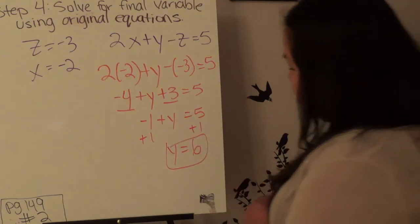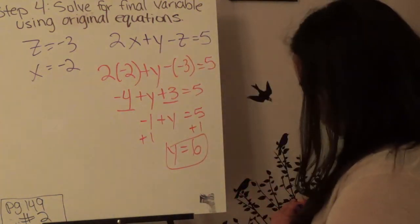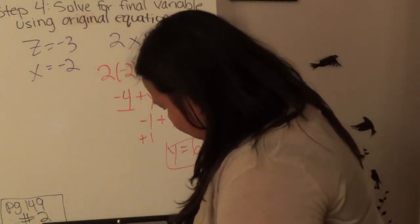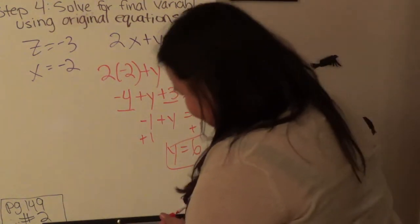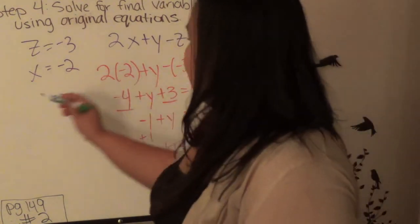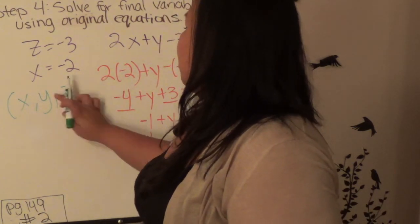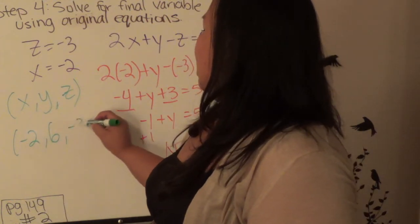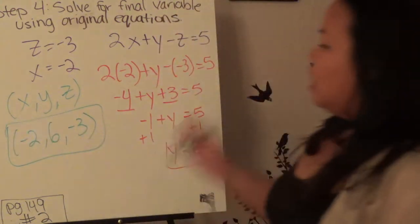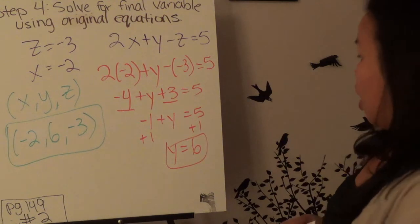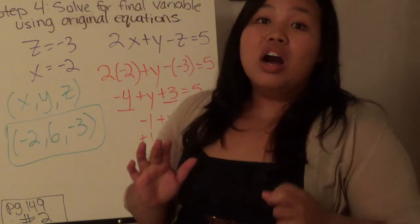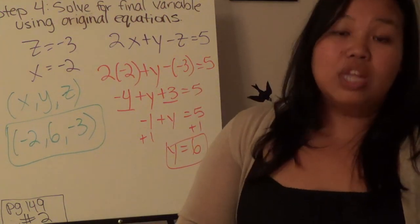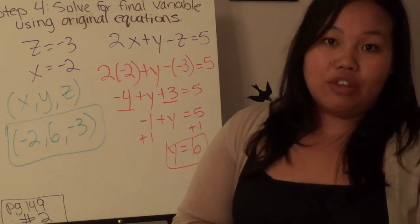My final answer is written as a point with all three coordinates: x equals negative 2, y equals 6, and z equals negative 3 — so the answer is (negative 2, 6, negative 3). It took a lot of steps with elimination and substitution to get there. You won't have a lot of homework, but each problem will be long. Go ahead and try page 149, number 2, and bring it to class. If you don't fully understand it, that's okay — just try it and see how much you can get. See you in class.